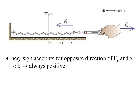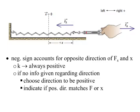k is always positive. So, if it says negative kx, don't think that you have a negative spring constant, because that's not possible — it's always positive. So, if you don't have any info given regarding direction, then you just choose a direction to be positive, and then indicate if it matches your force or your displacement. The negative is really there just to make sure that we get all positives in the end, but we know that our displacement will be opposite to our force.